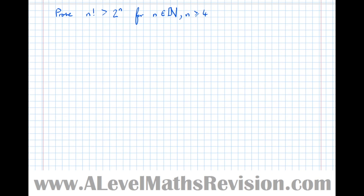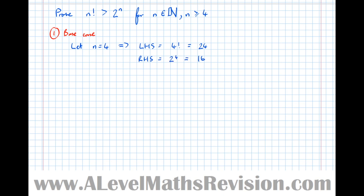Let's try another example: prove that n factorial is greater than 2 to the n, for n being a natural number greater than or equal to 4. Step one, the base case, is n equals 4. Let n equal 4, which implies the left-hand side equals 4 factorial, which is 24. The right-hand side equals 2 to the power of 4, which is 16. Therefore left-hand side is greater than right-hand side — true for n equals 4.